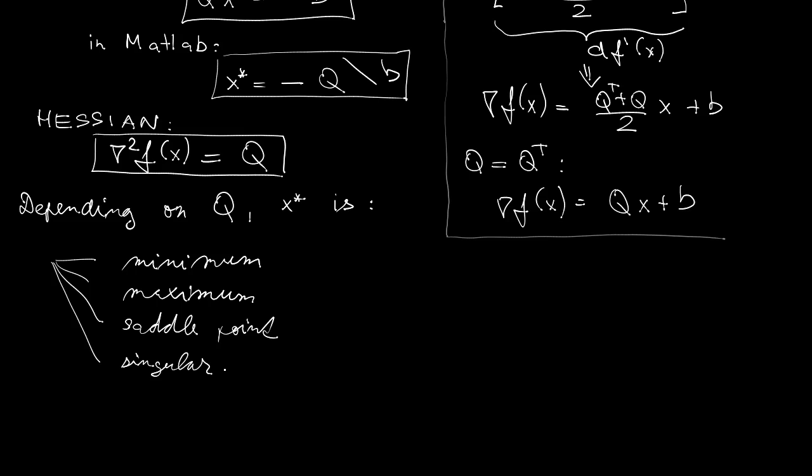Let's have a look at these by means of an example. We'll have three scenarios here, always described by the matrix Q and the vector B.